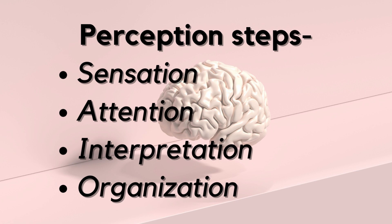The next process is interpretation. Once your senses gather information, your brain starts to make sense out of it. It's like your brain recognizing the flower as a familiar object and identifying its color and shape, or maybe its name.